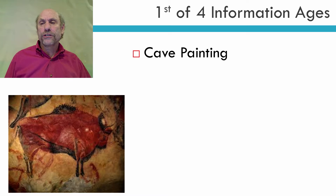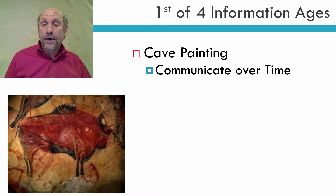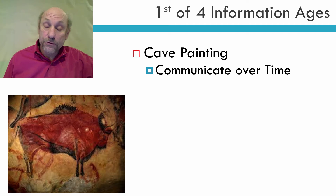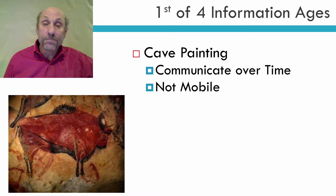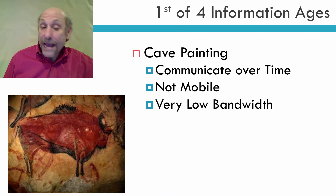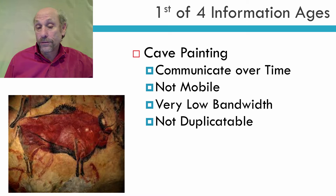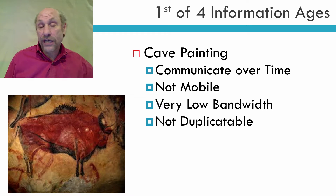I divide telecommunications into four information ages. The first information age I call cave painting. Cave painting allowed for communication over time, which is important. Looking at this picture, it was painted thousands and thousands of years ago and we're still looking at it today. So it was very good at communicating over time, but it wasn't mobile — you had to go to the cave to actually see the communication. And it's very low bandwidth.